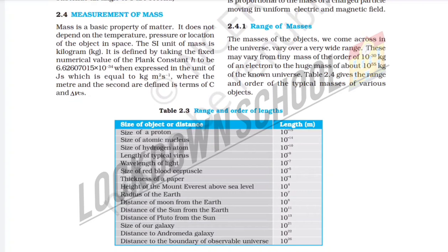Mass is a basic property of matter. It does not depend on temperature, pressure, or the location of an object in space. The SI unit of mass is the kilogram.